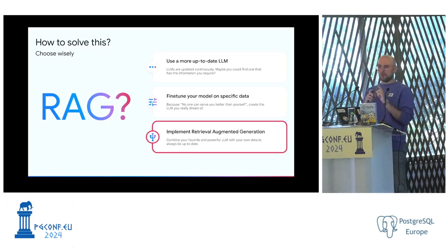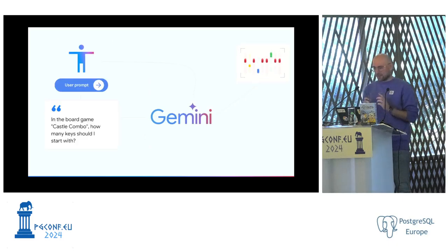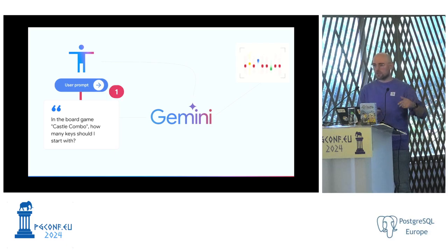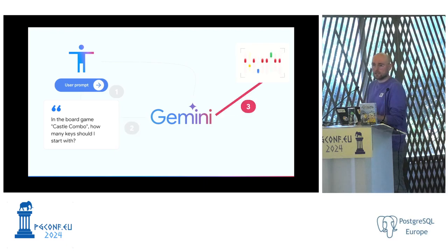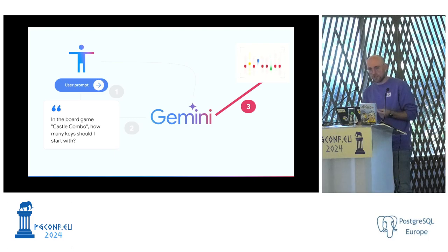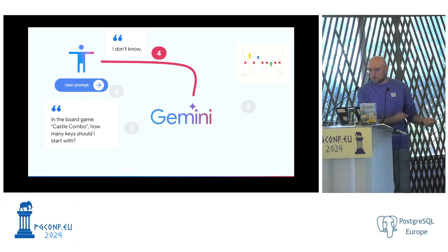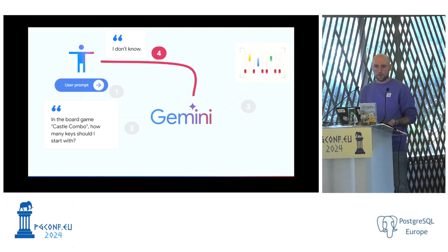Let's pause and explain what RAG actually is — I'll call it RAG because Retrieval Augmented Generation is quite long. In a standard LLM process, a user has a question, generates a prompt, and sends it to Gemini. Gemini looks inside its own data, does a similarity search, and based on its knowledge provides an answer — which in our case is 'I don't know' because it has never heard of Castle Combo.